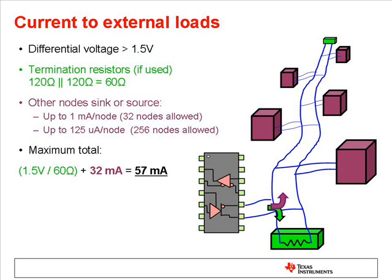The external load current comes from the differential driver circuits and is dissipated by the termination resistors and the other nodes. This applies only when the driver is actively transmitting 1s and 0s to the network.